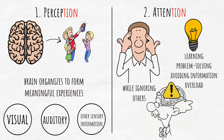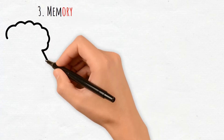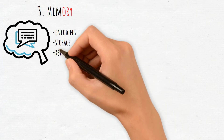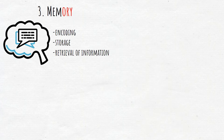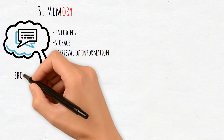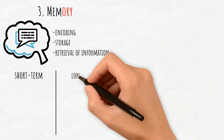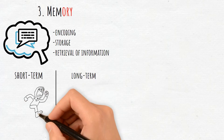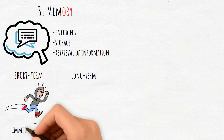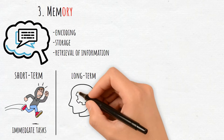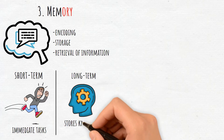3. Memory. Memory encompasses the encoding, storage, and retrieval of information. Cognitive psychologists divide memory into short-term and long-term memory. Short-term memory is used for immediate tasks, while long-term memory stores knowledge over time.